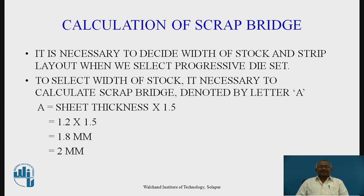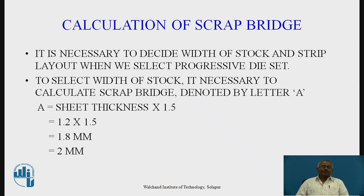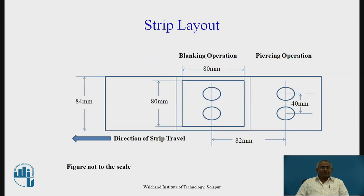The next part is, since we are selecting a progressive die, we have to calculate a quantity called the scrap bridge. The scrap bridge is essential to decide the width of the stock and to decide the strip layout, because strip layout will determine percentage utilization, force required, and other parameters. It is denoted by the letter A, given as A = sheet thickness × 1.5. Our sheet thickness is 1.2 mm, so A = 1.2 × 1.5 = 1.8 mm, rounded to 2 mm. So our scrap bridge is 2 mm.